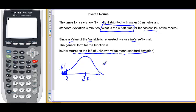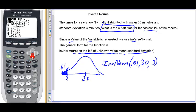So we use inverse norm. The area to the left of the unknown value is 0.01. The mean is 30 and the standard deviation is 3. So on the calculator, we'll go second distributions, inverse norm.